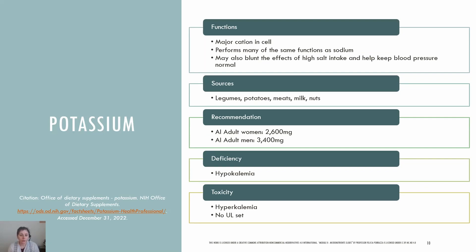Potassium is the most abundant positively charged electrolyte in the intracellular fluid. We need potassium for fluid balance, nerve transmission, and muscle contraction. Potassium is found in a wide variety of plant and animal foods and beverages. Good sources include legumes like soybeans and potatoes. Meats, poultry, fish, milk, yogurt, and nuts also contain potassium.